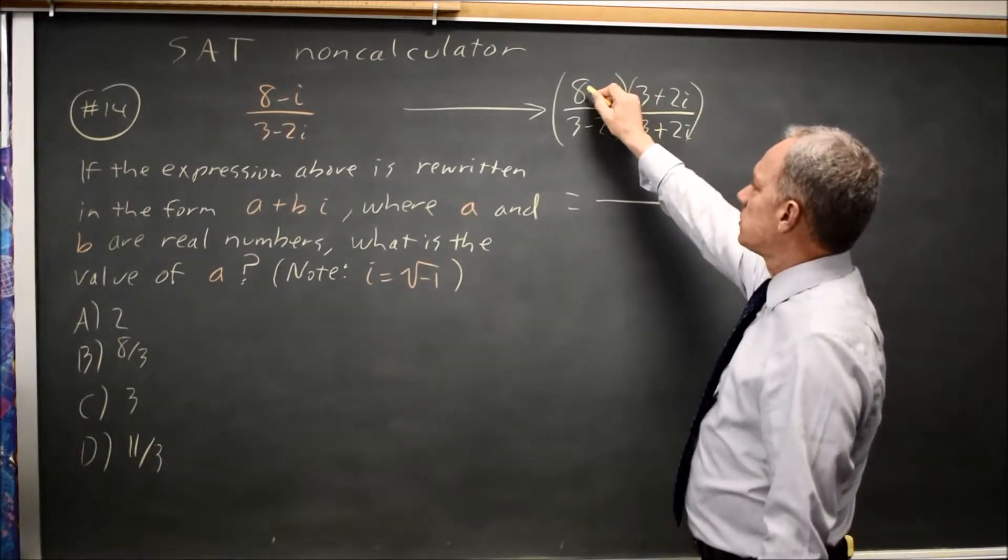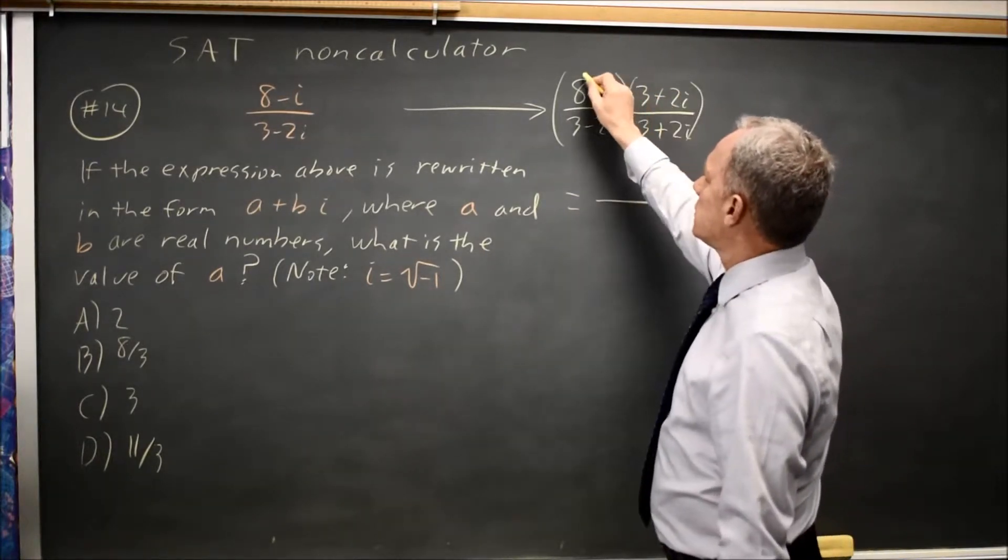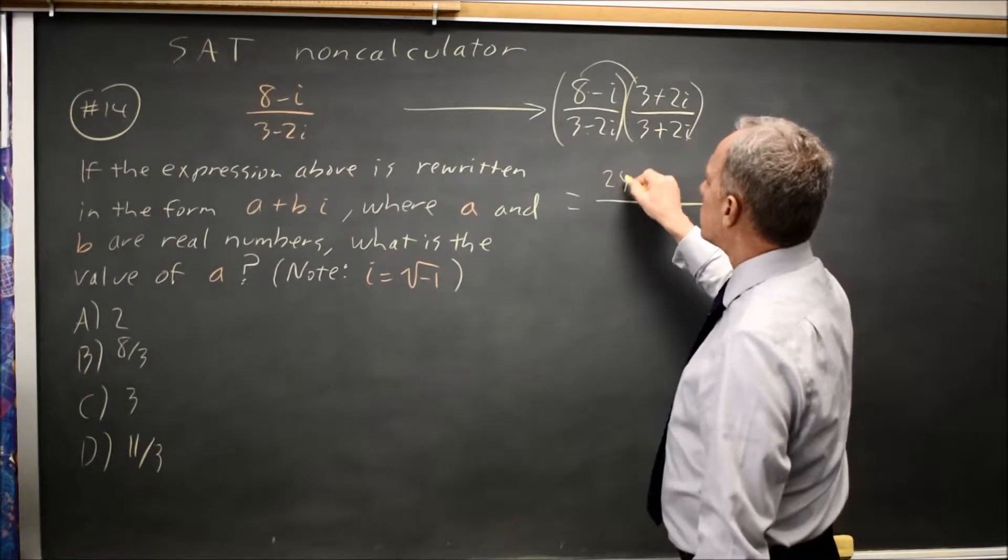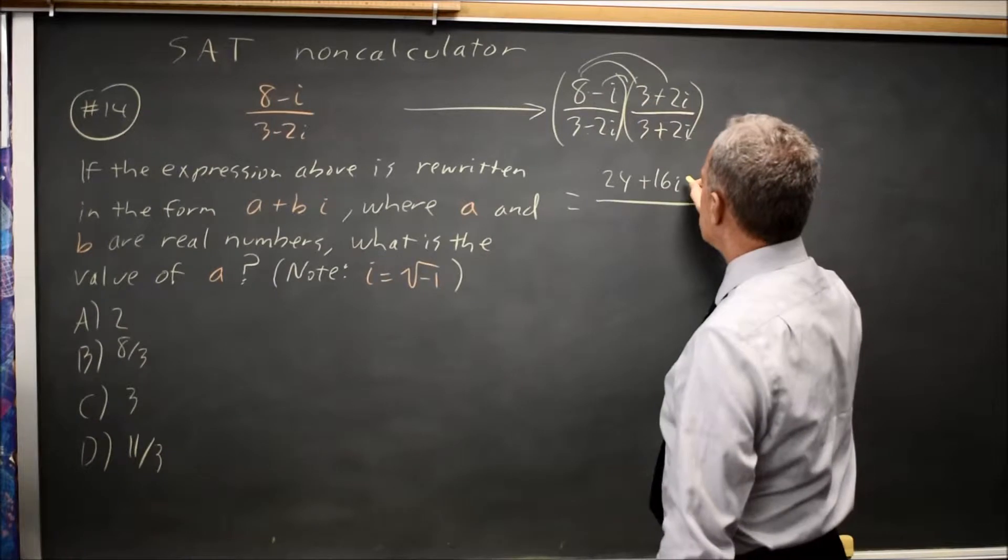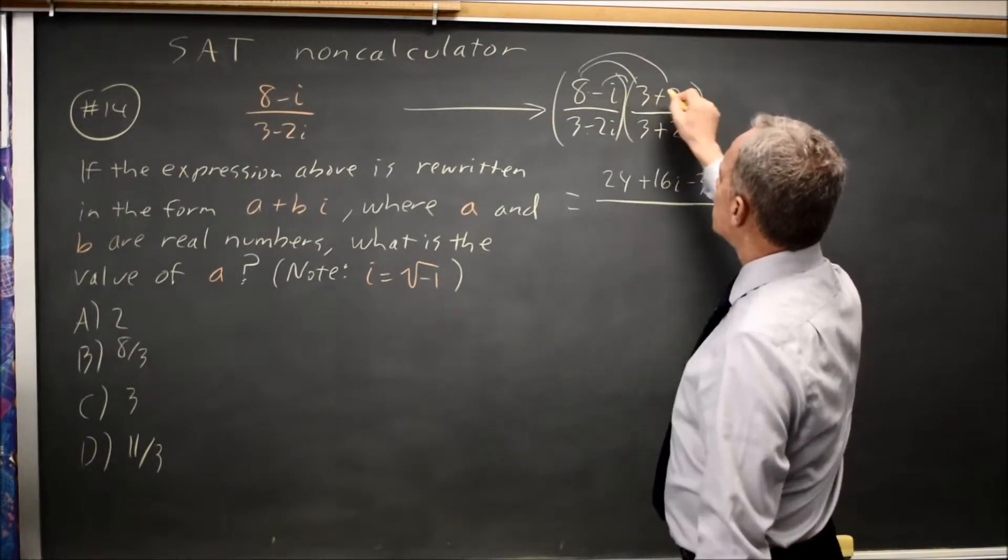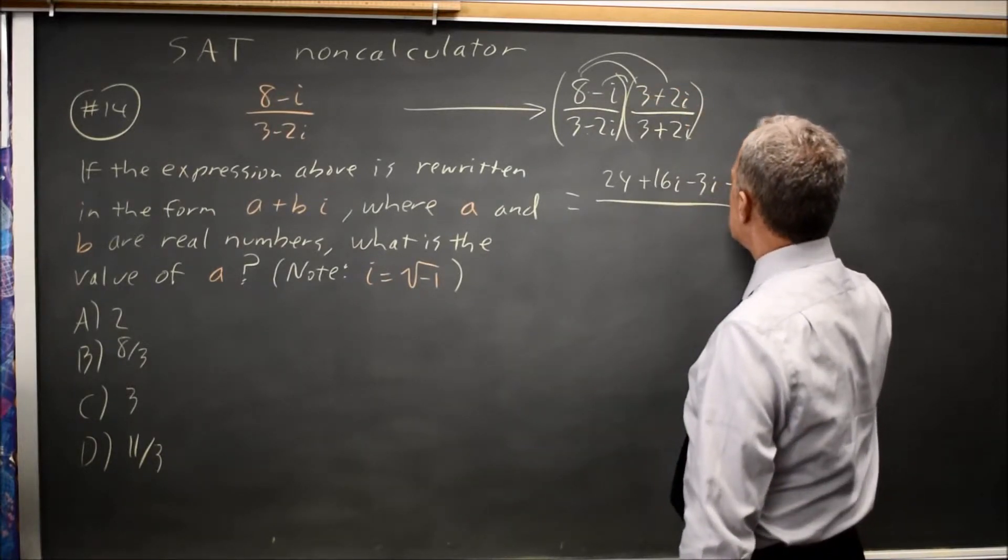Now we're going to use FOIL to multiply these complex numbers in the numerator. 8 times 3 is 24, 8 times 2i is positive 16i, negative i times 3 is negative 3i, negative i times 2i is negative 2i squared.